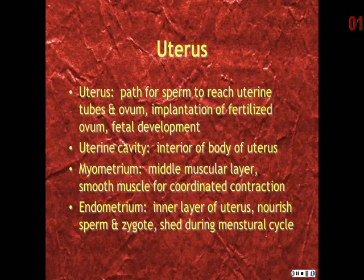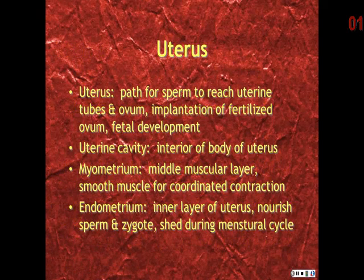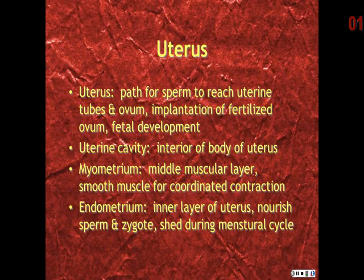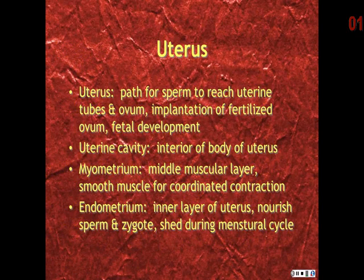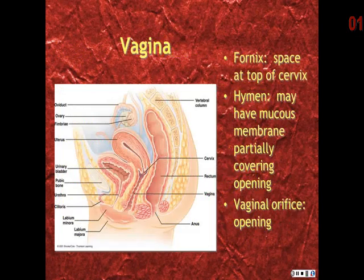The uterus also provides a place for the fertilized ovum to implant and develop into a fetus. The interior body is the uterine cavity. The middle muscular layers are the myometrium, composed of smooth muscle for coordinated contraction. The inner layer is the endometrium, which nourishes the sperm and zygote and is the portion shed during the menstrual cycle.